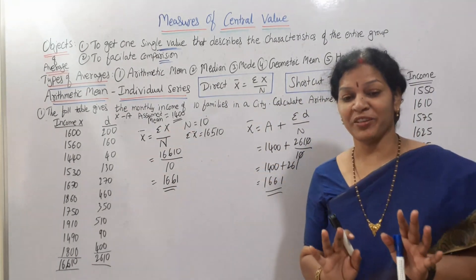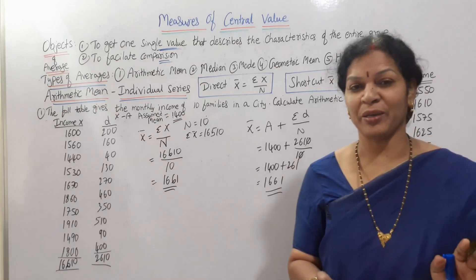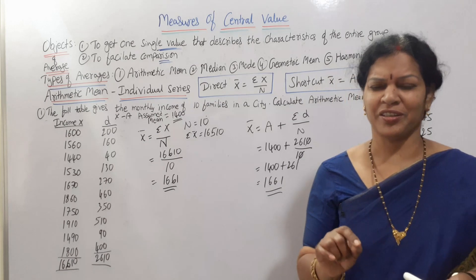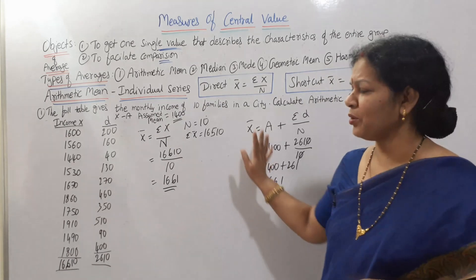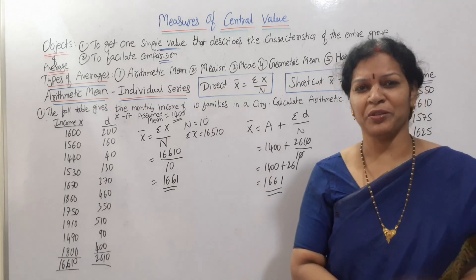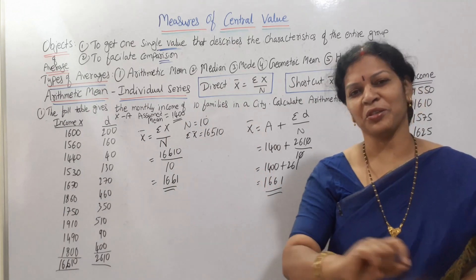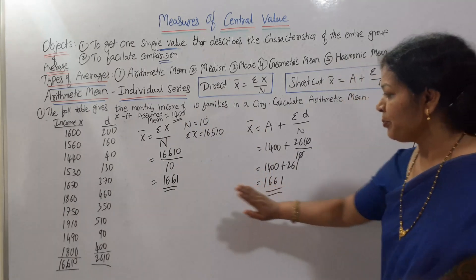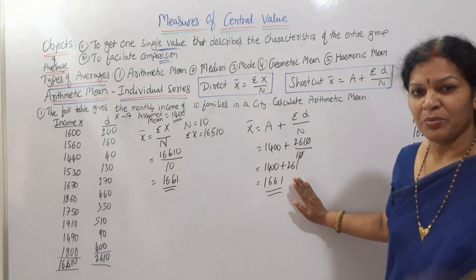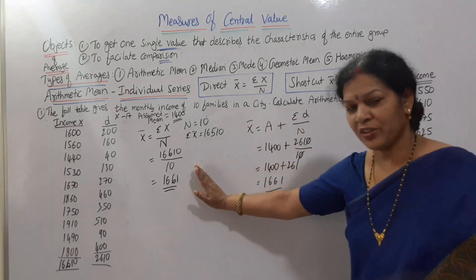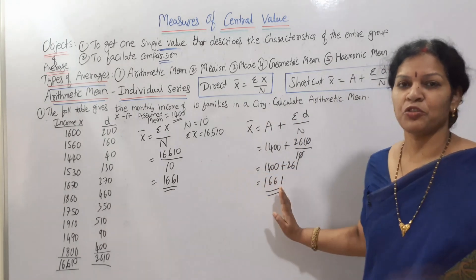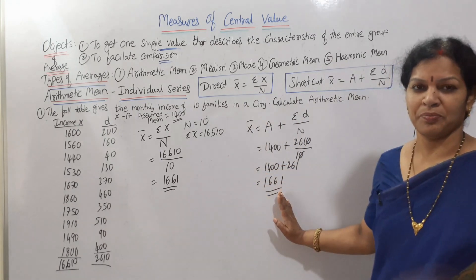We need to be very careful with calculations. Generally, students tend to make small arithmetic mistakes, so double-check your work. Both methods — direct and shortcut — give you 1,661. Whichever method you follow in the exam, the answer should be the same.